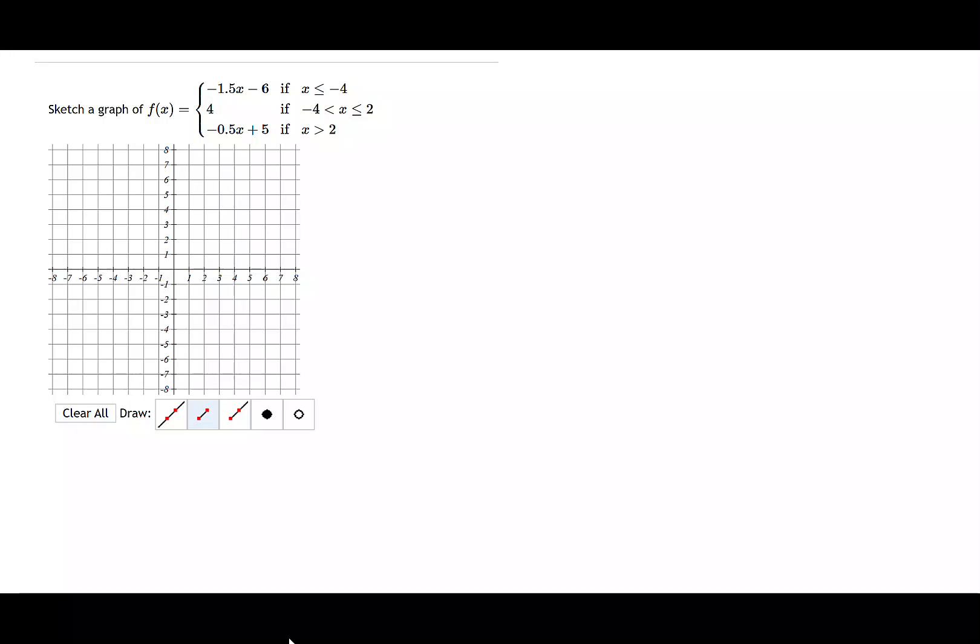So say we have this problem: negative 1.5x minus 6 when x is less than or equal to negative 4. Then it's 4 when x is greater than negative 4 and less than or equal to 2. And then it's negative 0.5 of x plus 5 if x is greater than 2.